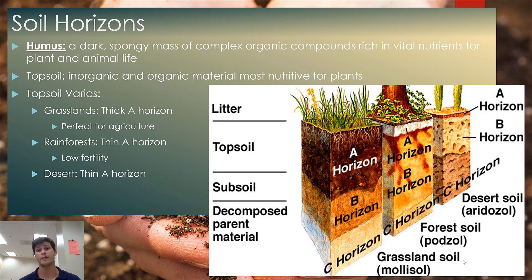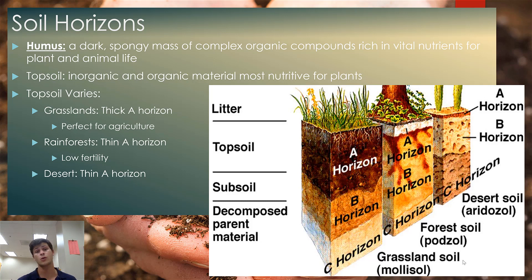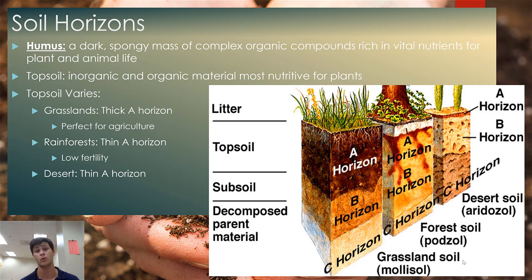Not all soils have the same layers in the same thicknesses, and not all soils have all soil horizons. Deserts, for example, might not have an organic horizon or any humus at all because there's so little biological activity. Soil horizons and their thicknesses vary from ecosystem to ecosystem, or more importantly, from biome to biome. What matters for organic life are your mineral components, organic components, and the amount of water in the soil.